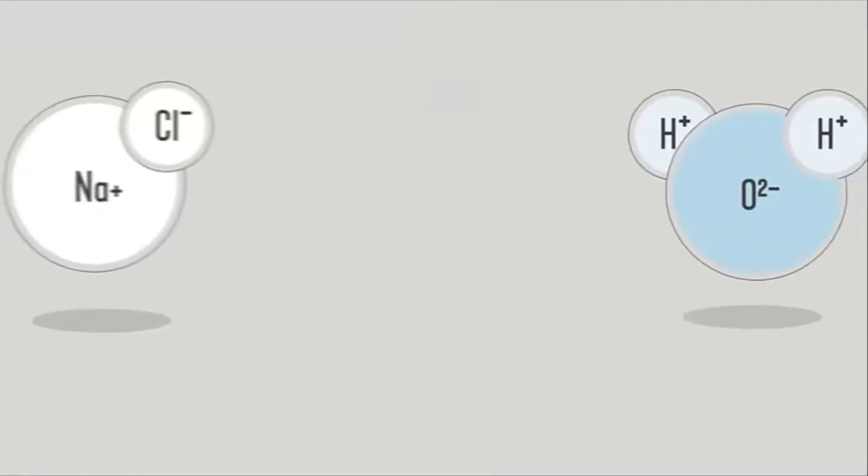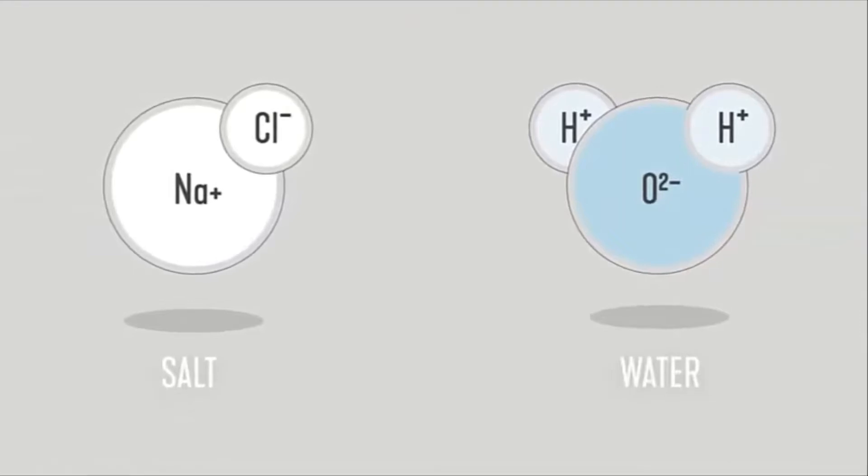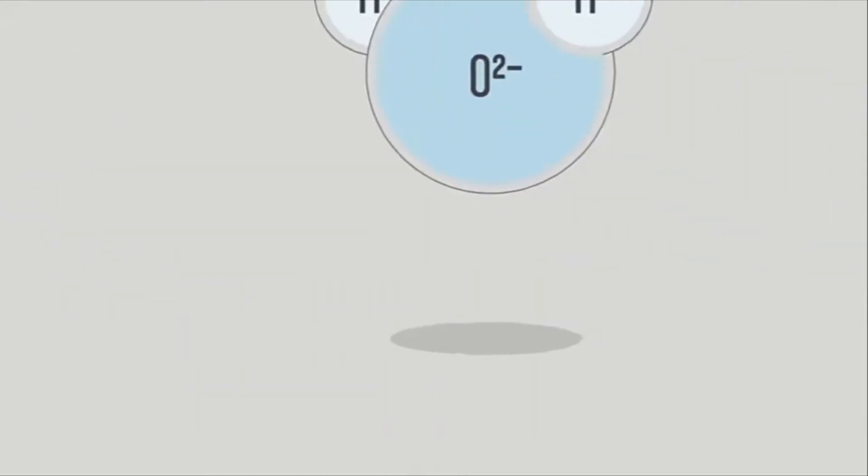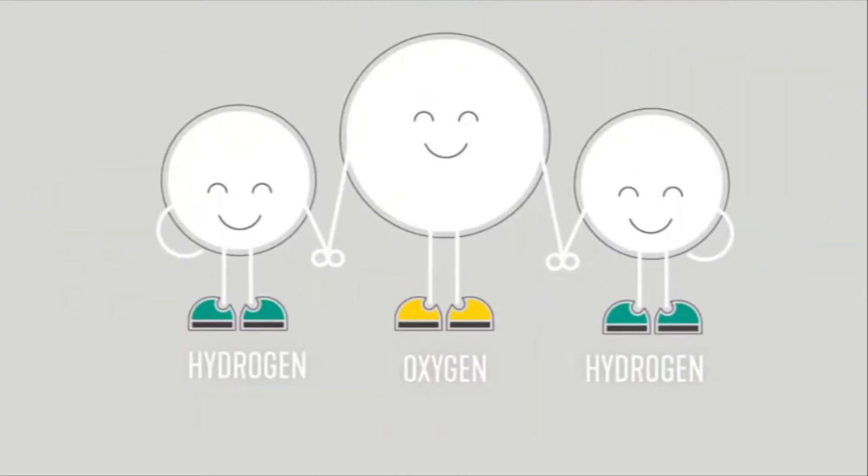Now back to the science bit. Again, each salt and water molecule is made up of different elements. You might remember this from middle school. Salt is made of sodium and chloride and water is made up of hydrogen and oxygen. You know, H2O.